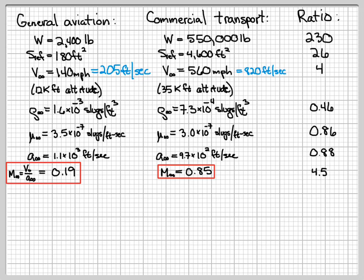The overall ratio between the Mach numbers is 4.5. So in terms of Mach numbers, the commercial transport has four to five times a higher Mach number than this general aviation aircraft.